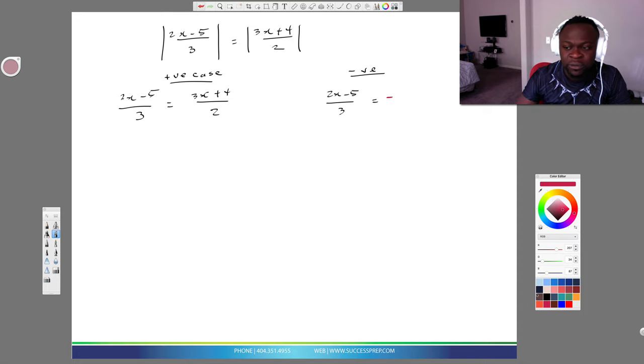I look at 2x minus 5 over 3, I write the same thing, but this time I'm going to introduce a negative. So I'm going to introduce a negative 3x plus 4 over 2. Now this is no different from the way I've taught the other absolute value questions. The fact that you have absolute value on both sides, don't let that freak you out. You're still going to deal with it the same by creating a positive case and a negative case.